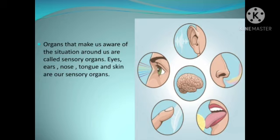Organs that make us aware of the situation around us are called sensory organs. Eyes, ears, nose, tongue and skin are our sensory organs.